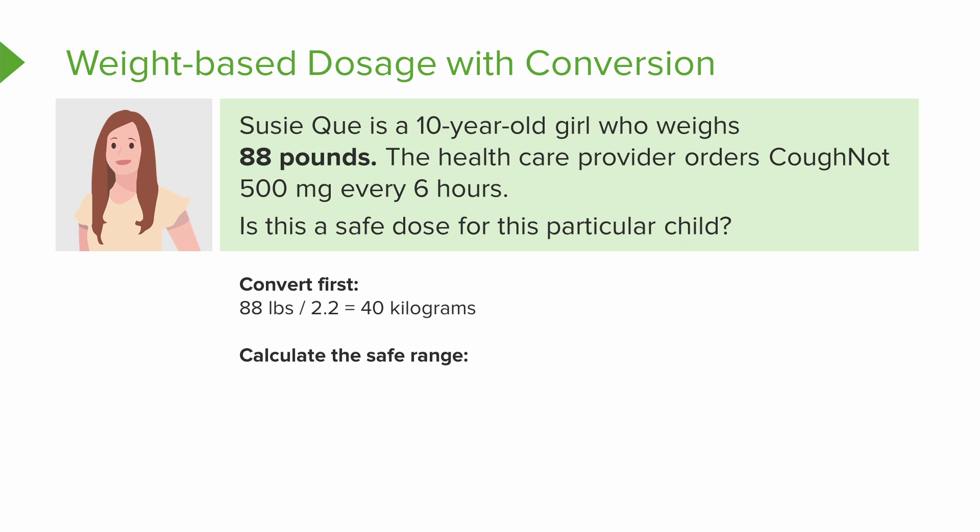Now we're going to calculate the safe range. Look again at the label — what is the safe range? Her weight, 40 kg, times 50 milligrams equals 2,000 milligrams of COFNOT. That should be safe, so we've got the safe range.